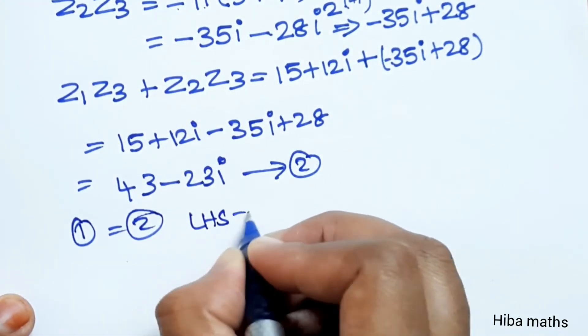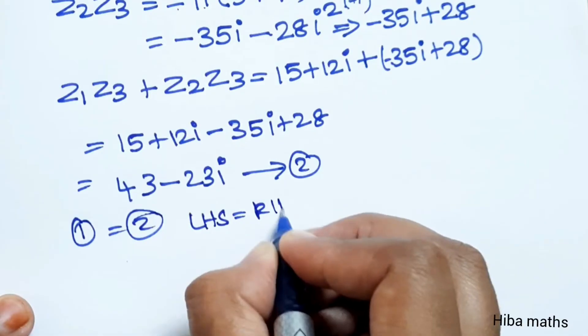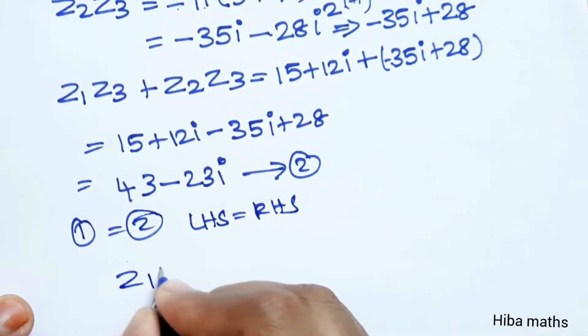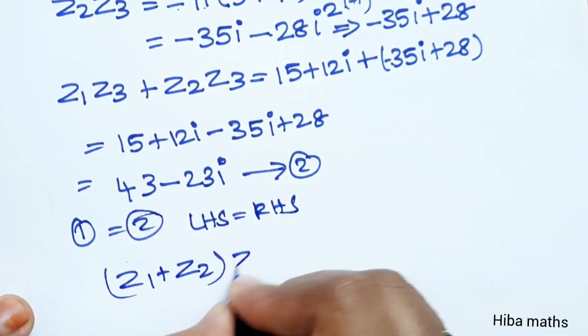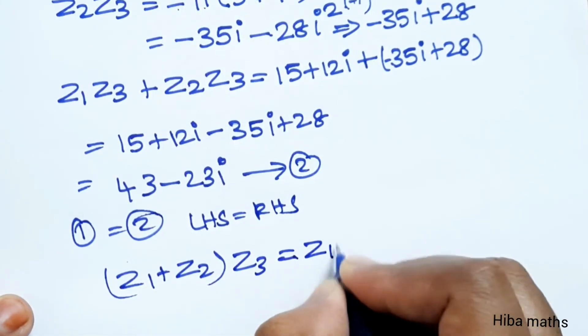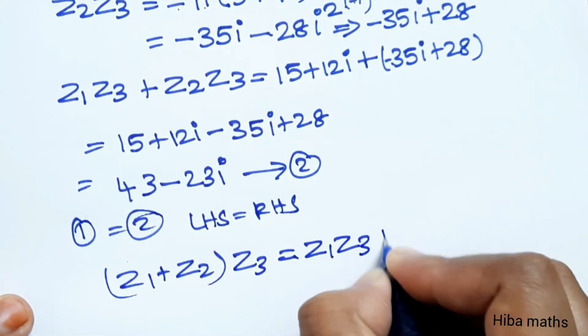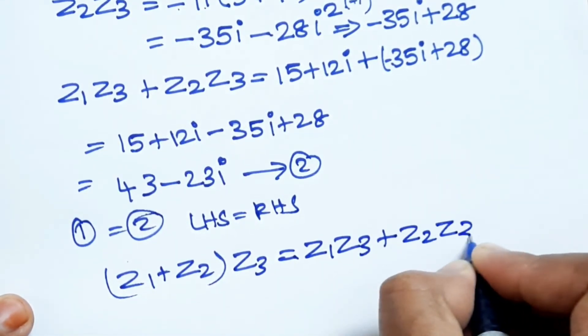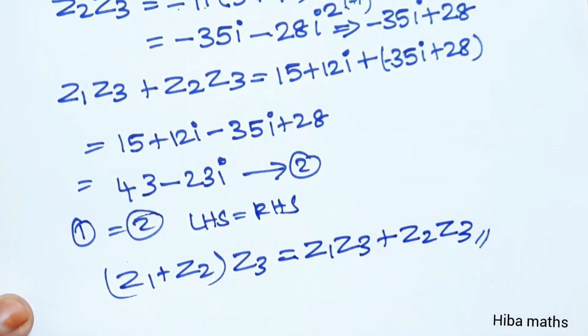Both results are 43 minus 23i, so equation 1 equals equation 2. Therefore z1 plus z2 into z3 is equal to z1 z3 plus z2 z3. Hence proved.